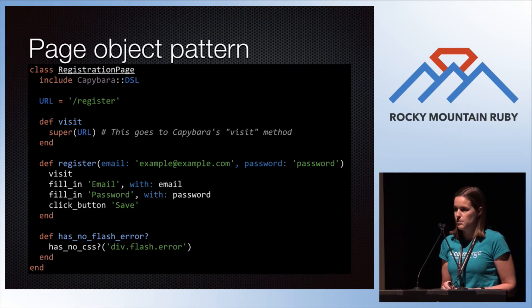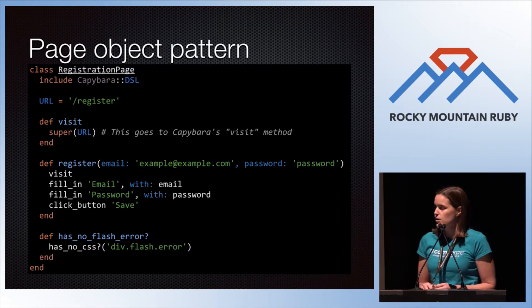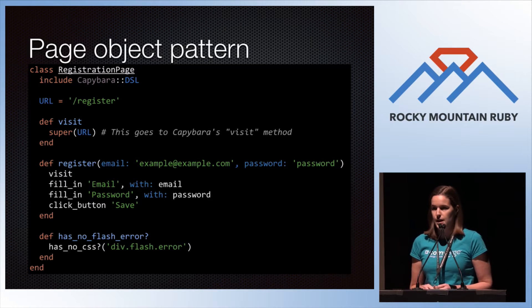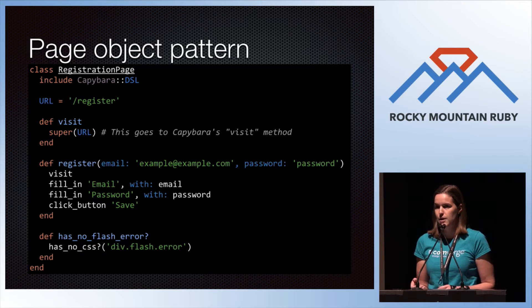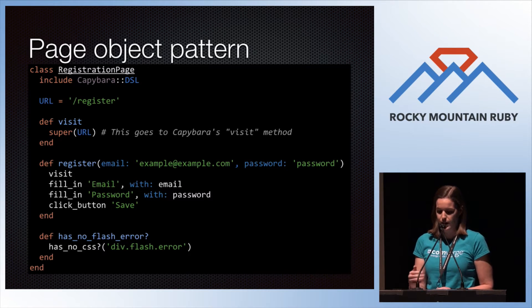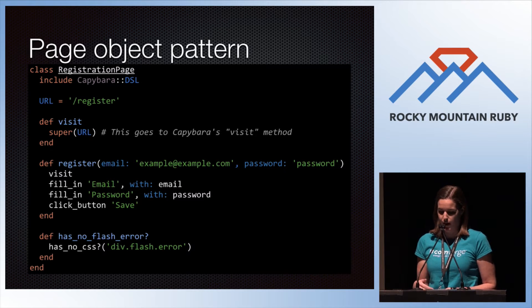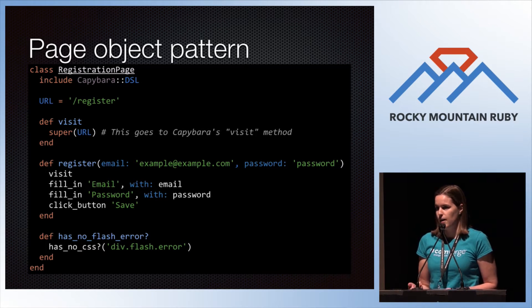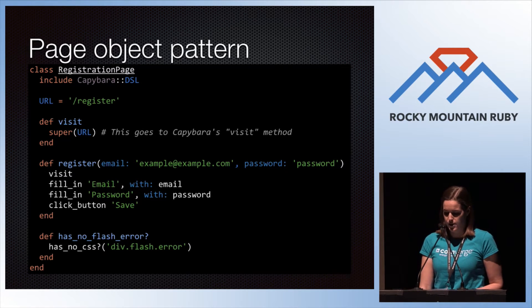Here's an example for the registration page. It includes the Capybara DSL, stores the URL for the page, and just calls Capybara's visit method without having to pass in the URL. There's a register method that has those familiar visit, fill_in email, fill_in password, save steps. And then we've wrapped the CSS for the expected error and it has a no_flash_error method for use in the test.